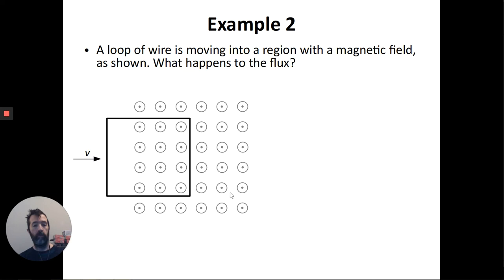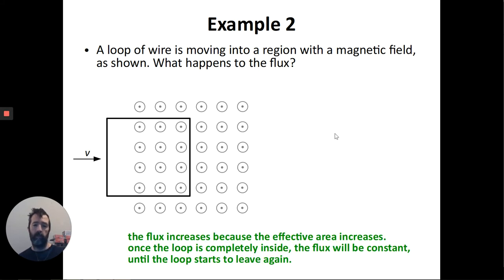Once the loop reaches a spot like this, at that point, continuing to move doesn't actually change the number of field lines that go through it. But later on, when the loop leaves the field, it looks like the field stops right here. As the loop is moving out of the field, then the flux is going to decrease. So in this case, it initially increases, and you can think of that as an increase in the area, since we only care about the part of the area that overlaps with the field. But once that area reaches its maximum, then the flux will be constant until it leaves.